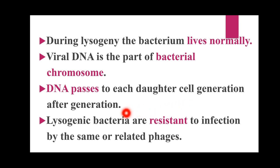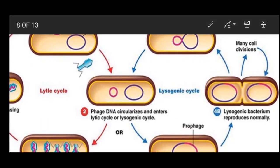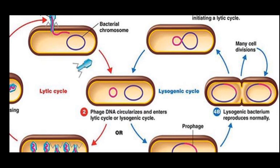Lysogenic bacteria cause resistance to infection by the same or related phage. The lysogenic bacteria fight against such infections. A diagram is being shown which displays both cycles — the lytic cycle and the lysogenic cycle. We can see that there are two cycles: the lysogenic cycle and the lytic cycle. We studied the lytic cycle in detail in the previous lecture; today we are studying the lysogenic cycle.